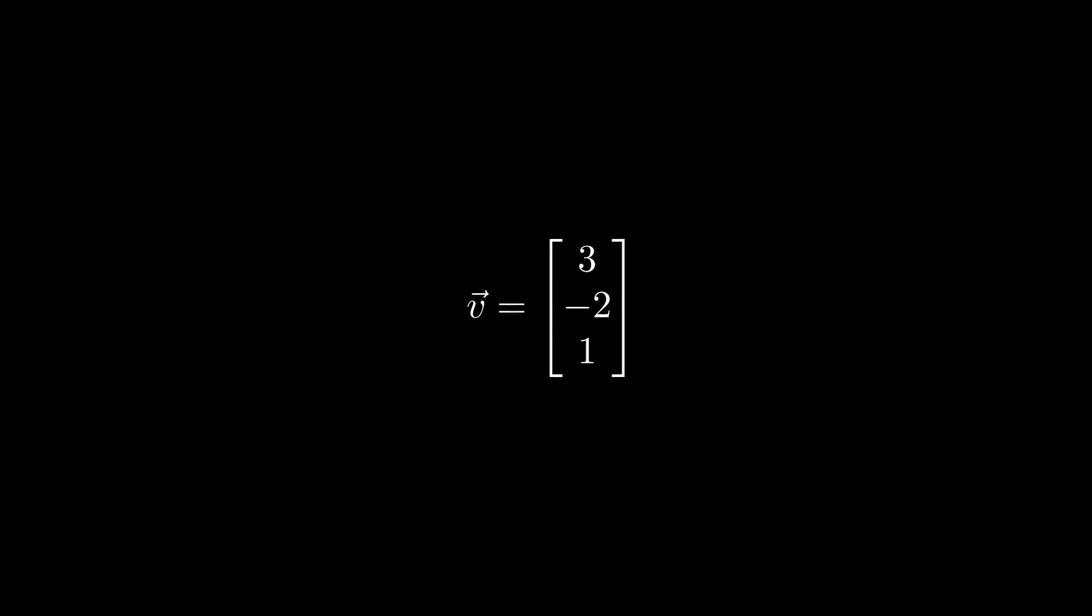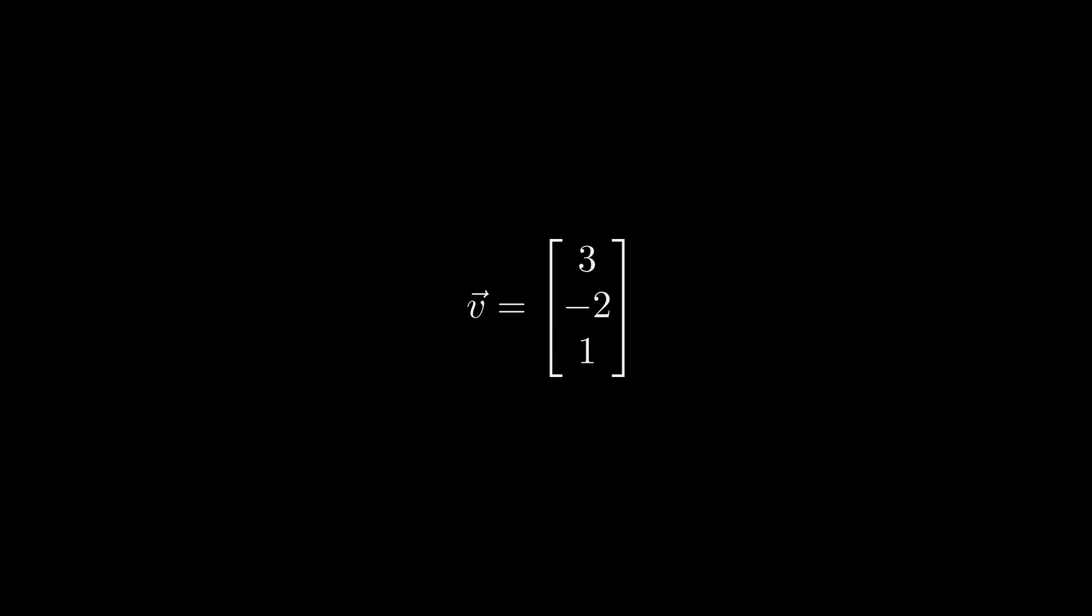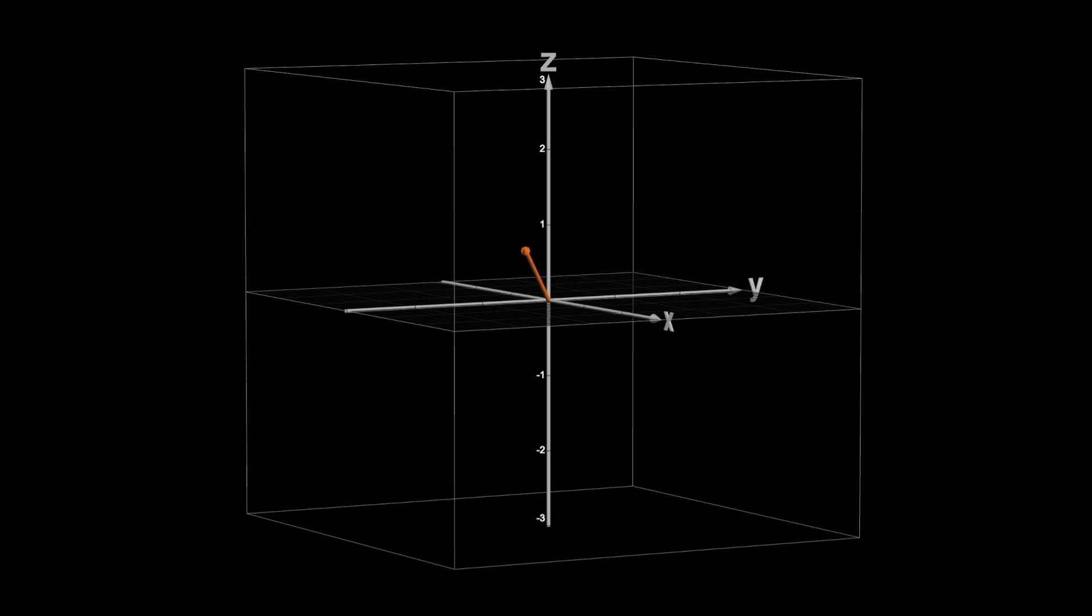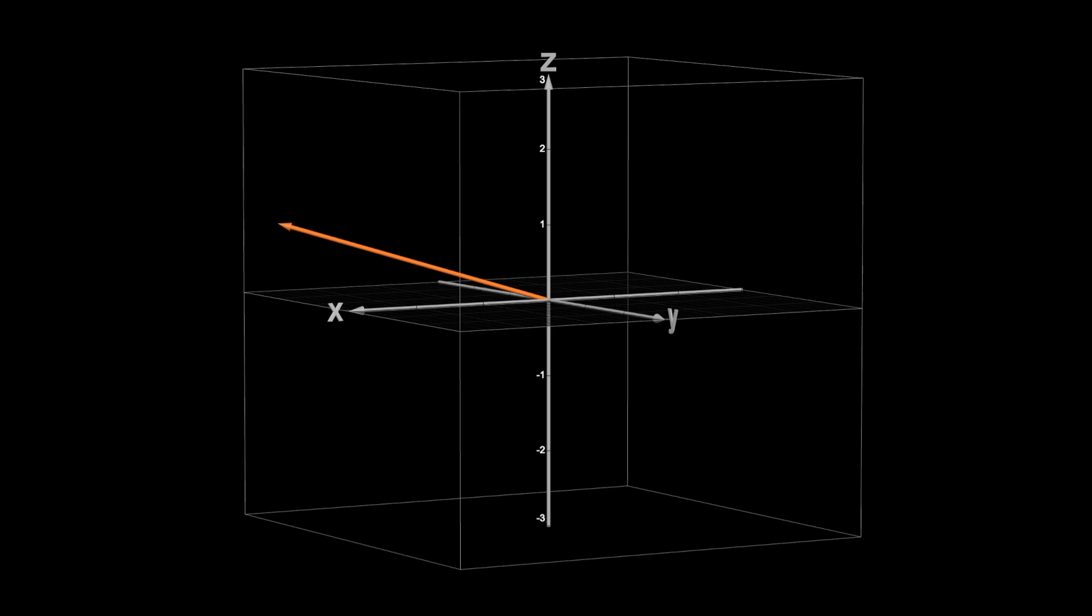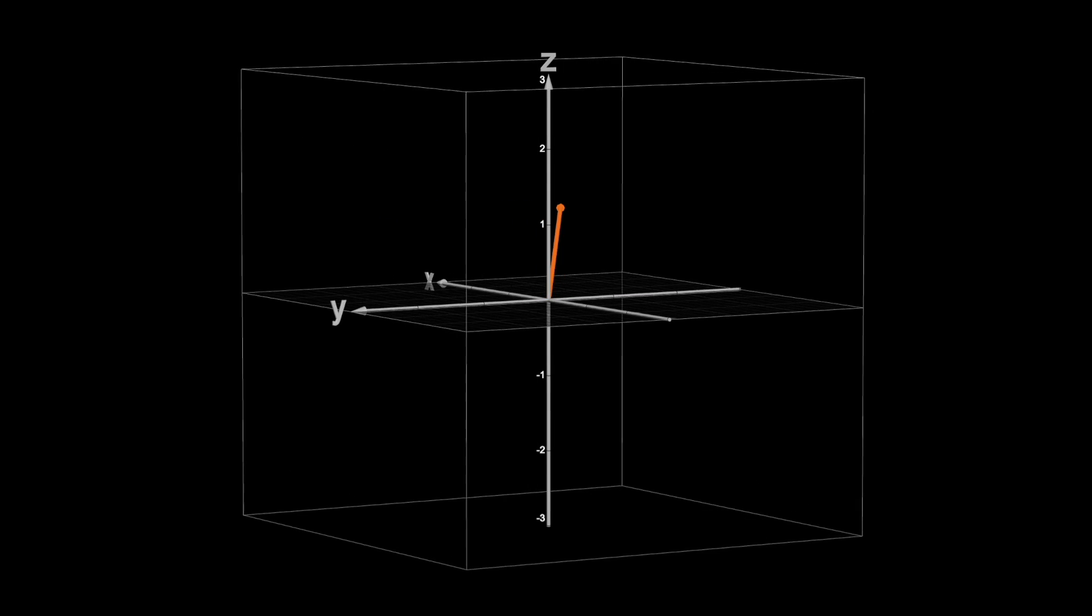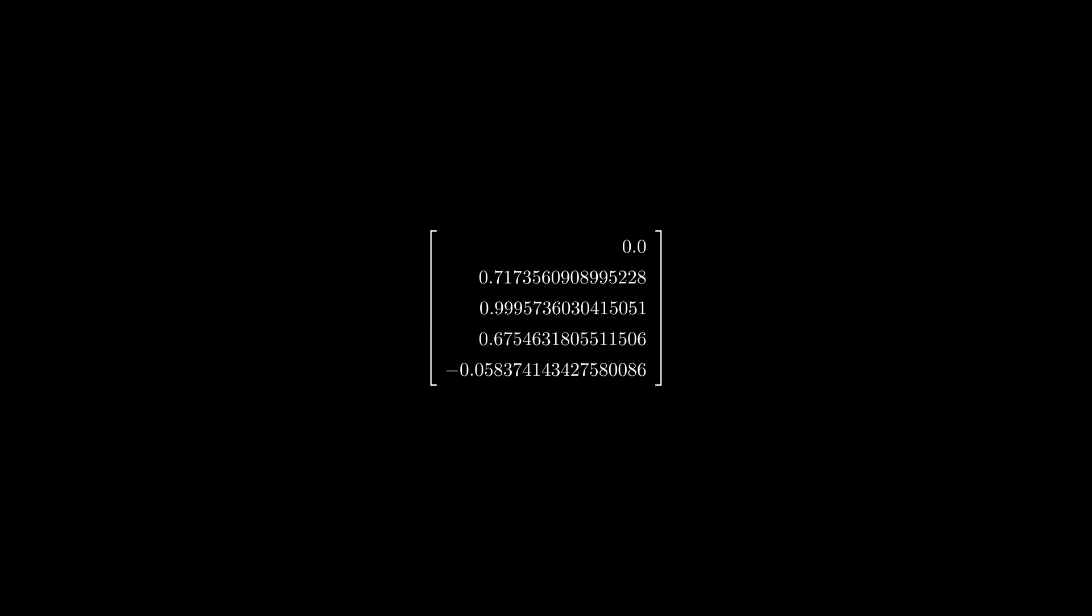Likewise, you could easily imagine a vector with another component. If we go any further than three dimensions, it becomes hard to visualize. Take the following vector, for instance. It has five components, meaning we would need five dimensions to represent it as a point in space. So let's instead visualize it by plotting the value of each component against the index of each component.